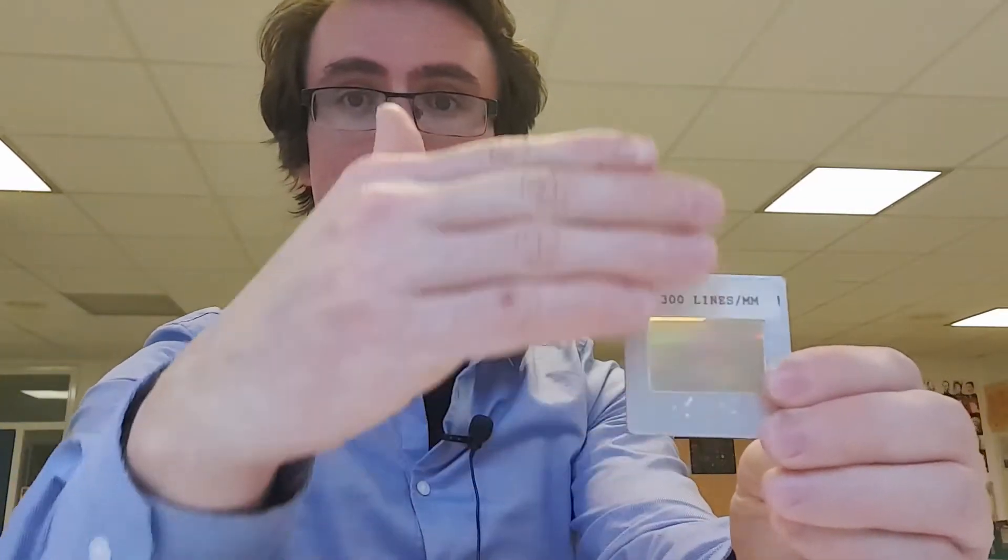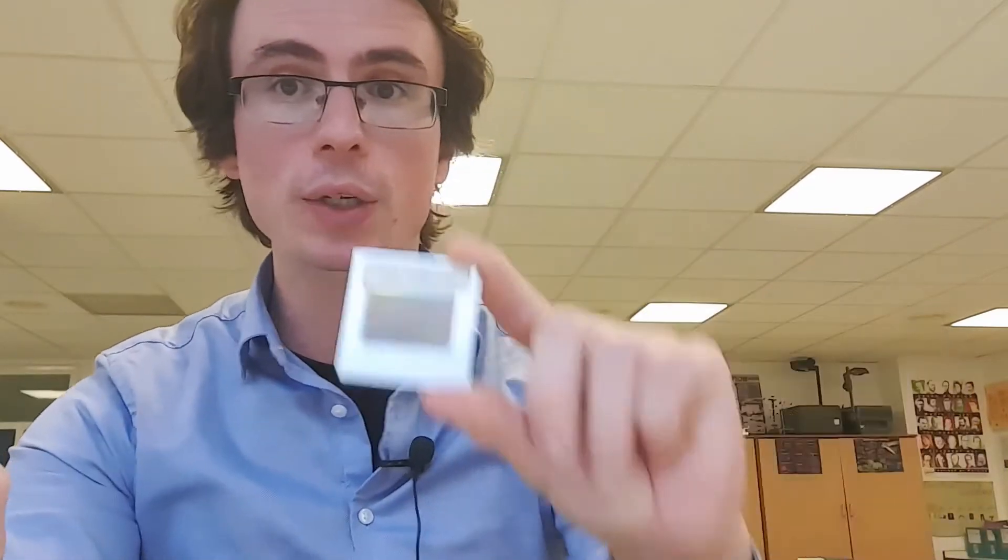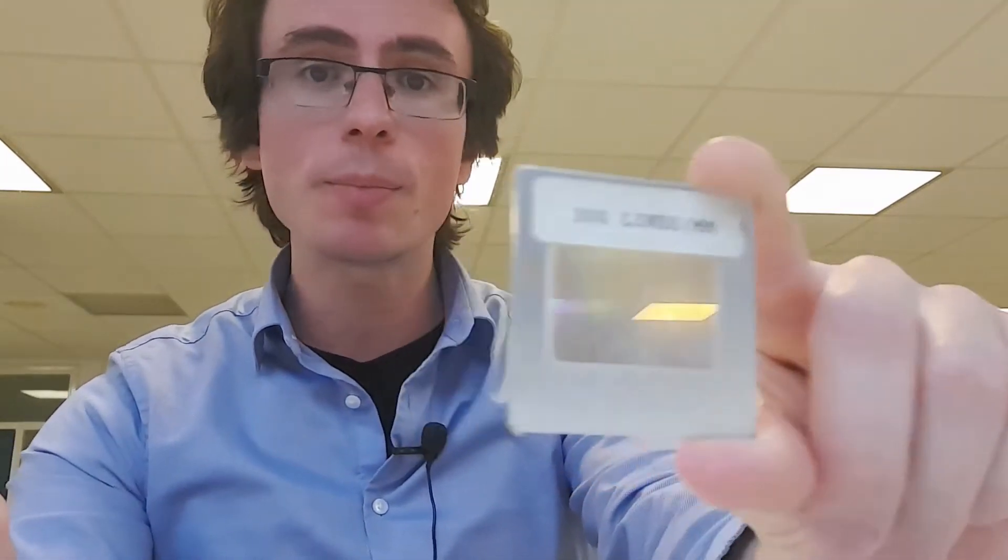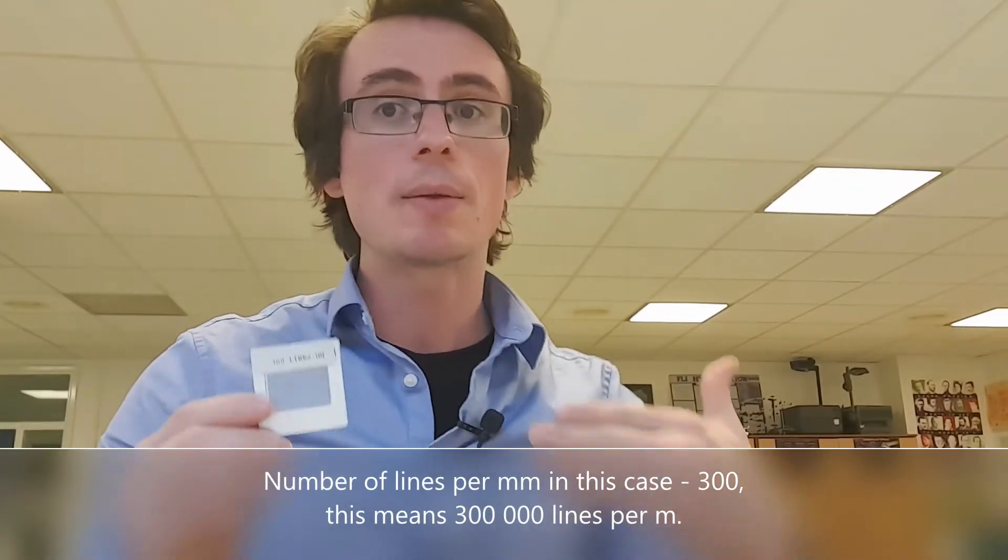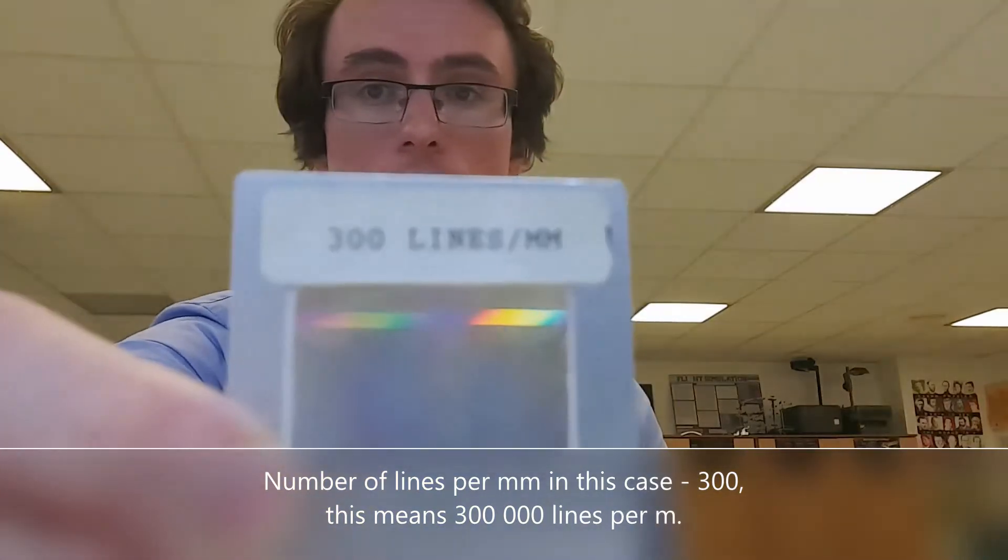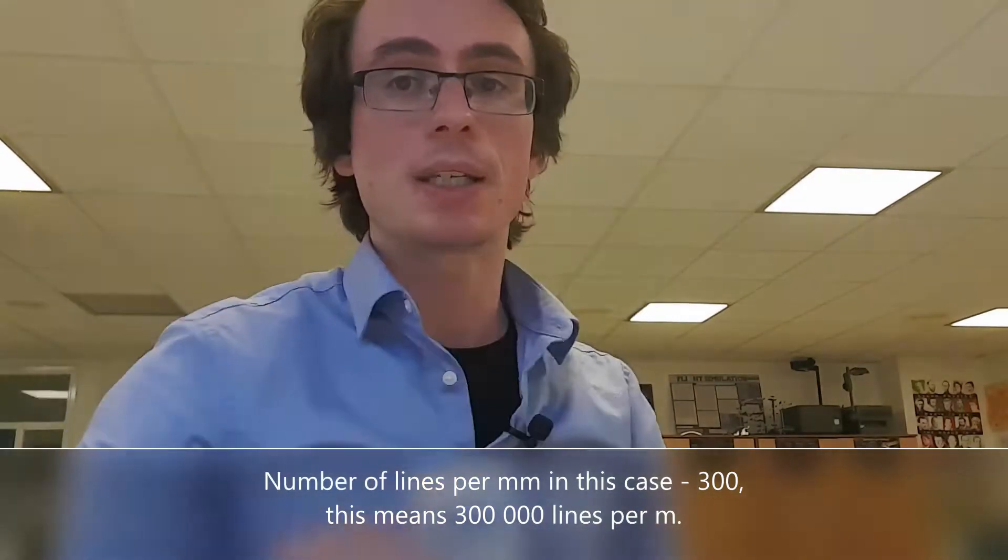We can actually make a diffraction grating, which consists of multiple different slits or openings. In fact, there's a little number over here—you'll notice it says 300 lines per millimeter.